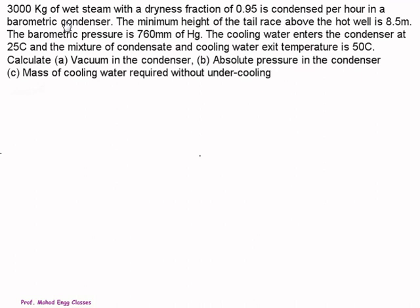3000 kg of wet steam with a dryness fraction of 0.95 is condensed per hour in a barometric condenser. The minimum height of the tail race above the hot well is 8.5 meters. This indicates the P_mix and its absolute value is given by 8.5 meters. The barometric pressure is 760 mmHg. The cooling water enters the condenser at 25 degrees Celsius and the mixture of condensate and cooling water exits at 50 degrees Celsius.